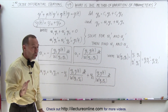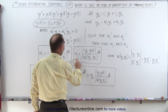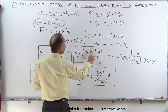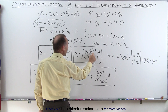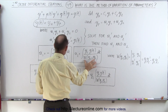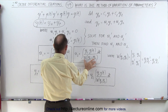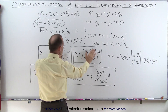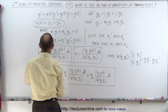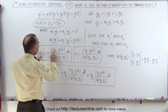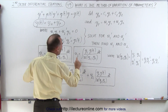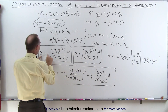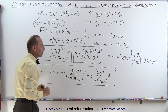The formula for u2 looks very similar: it is the integral of y1 times g(t) divided by the Wronskian, with respect to t. The denominator is the same Wronskian in both formulas. The key difference is that u1 uses y2 in the numerator and is negative, while u2 uses y1 in the numerator and is positive.